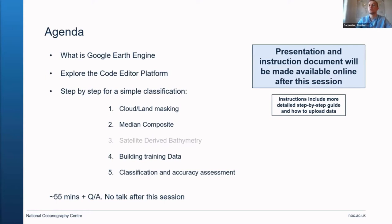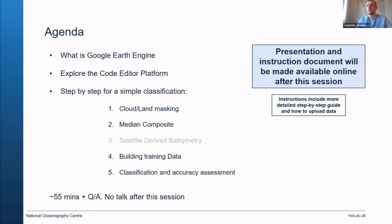We're just going to go through a simple classification to do with cloud and land masking, similar to what Tim just went through, and a median composite. We're going to touch on satellite-derived bathymetry, because this is going to be one of the inputs to the classification. We're going to build some training data, and then carry out the classification and accuracy assessment.